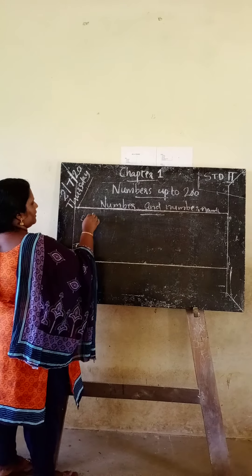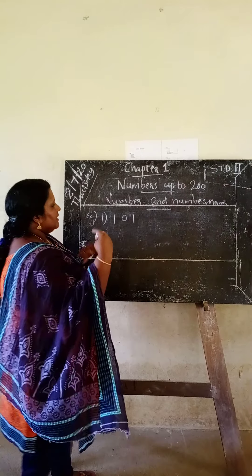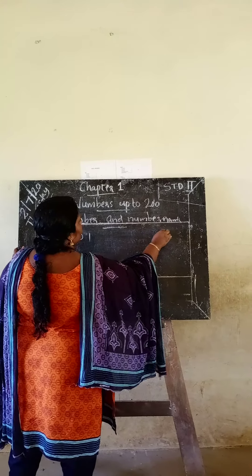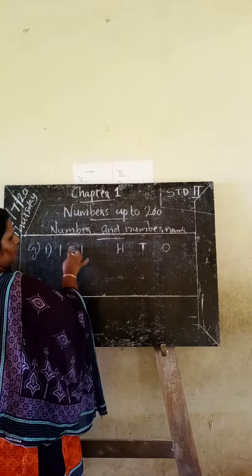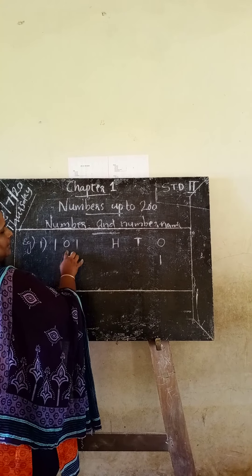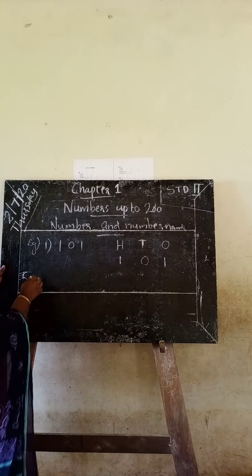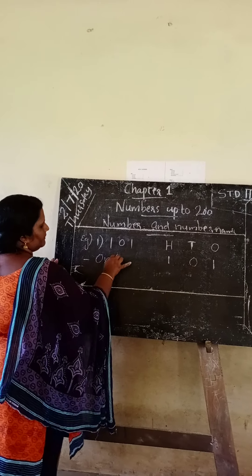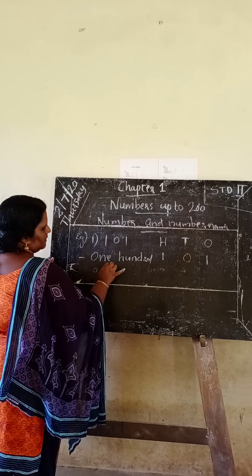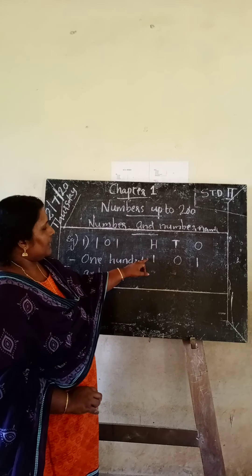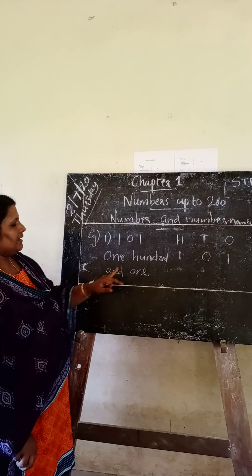Let us take the number 101. We represent this number in a place value chart with columns for 1, 10, and 100. 1 is in the place of 1, 0 is in the place of 10, and 1 is in the place of 100. So this number is read as one hundred and one.